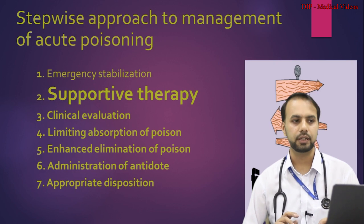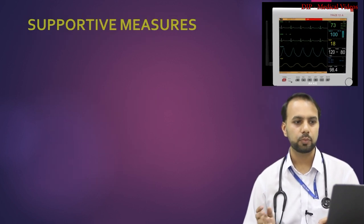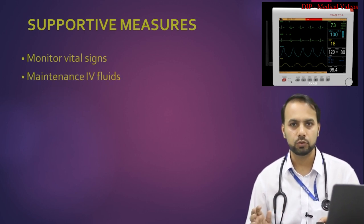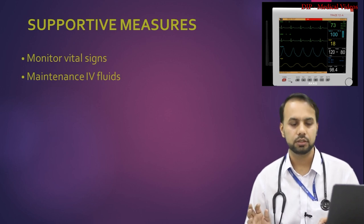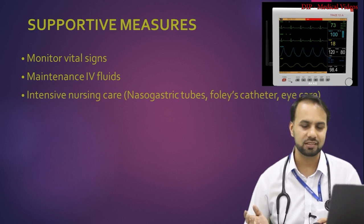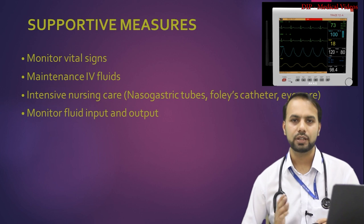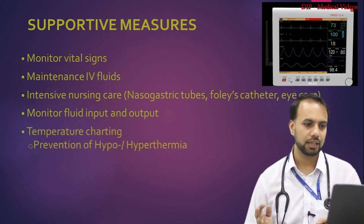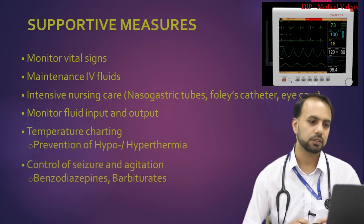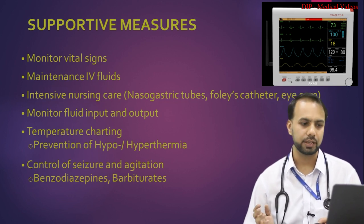The second step is supportive therapy. Monitor vital signs, provide maintenance IV fluid, and deliver intensive nursing care including nasogastric tube, Foley catheter, and eye care. Monitor input and output balance, perform temperature charting, and prevent hypo- or hyperthermia. For control of seizures and agitation, benzodiazepines or barbiturates may be given.